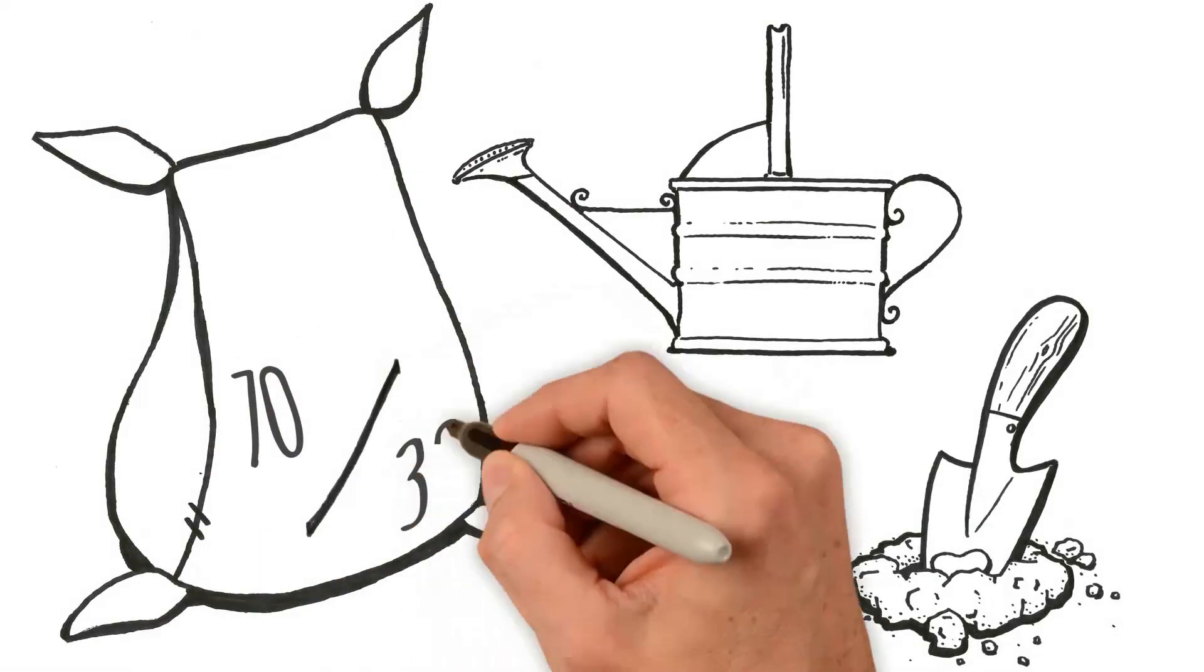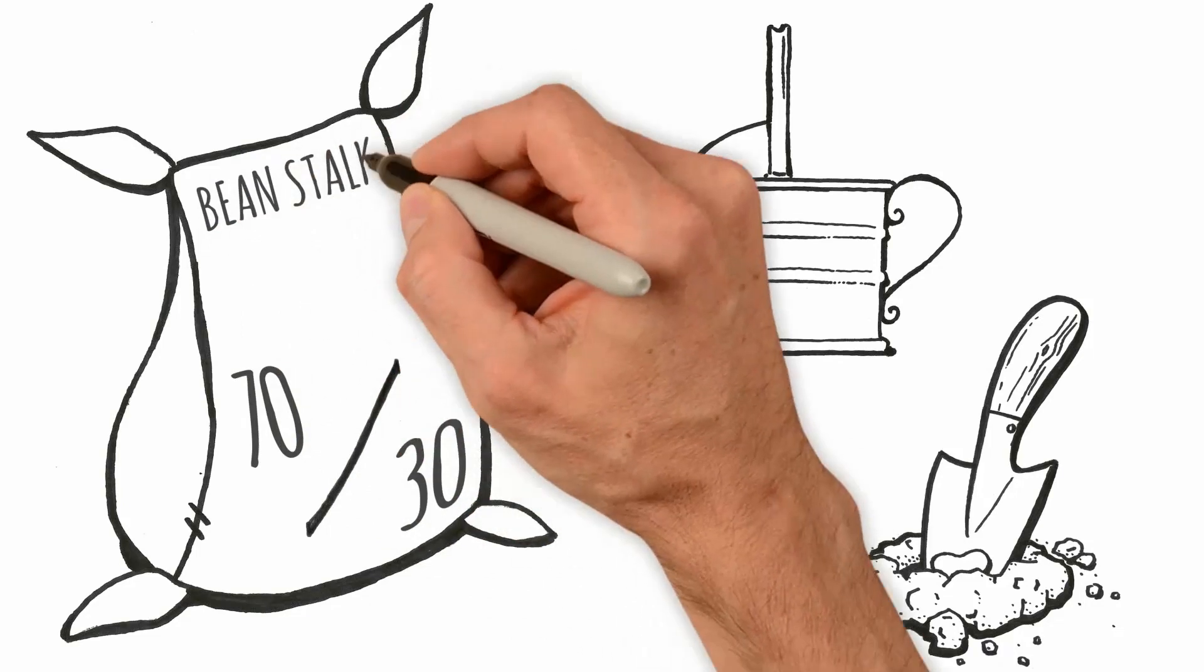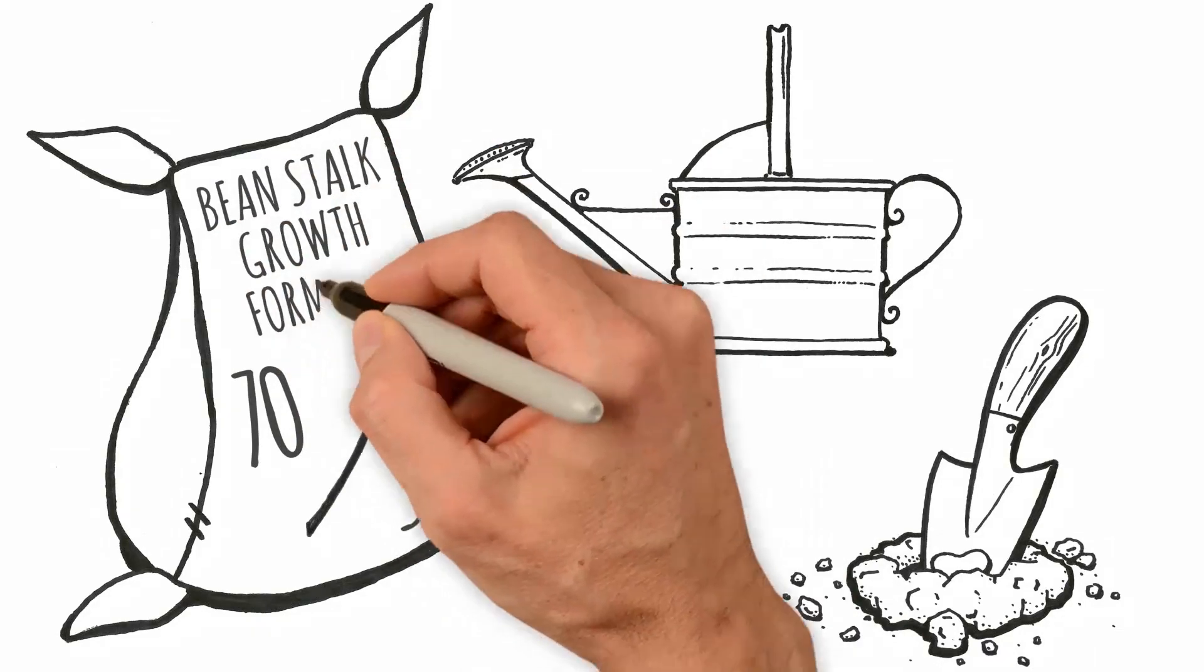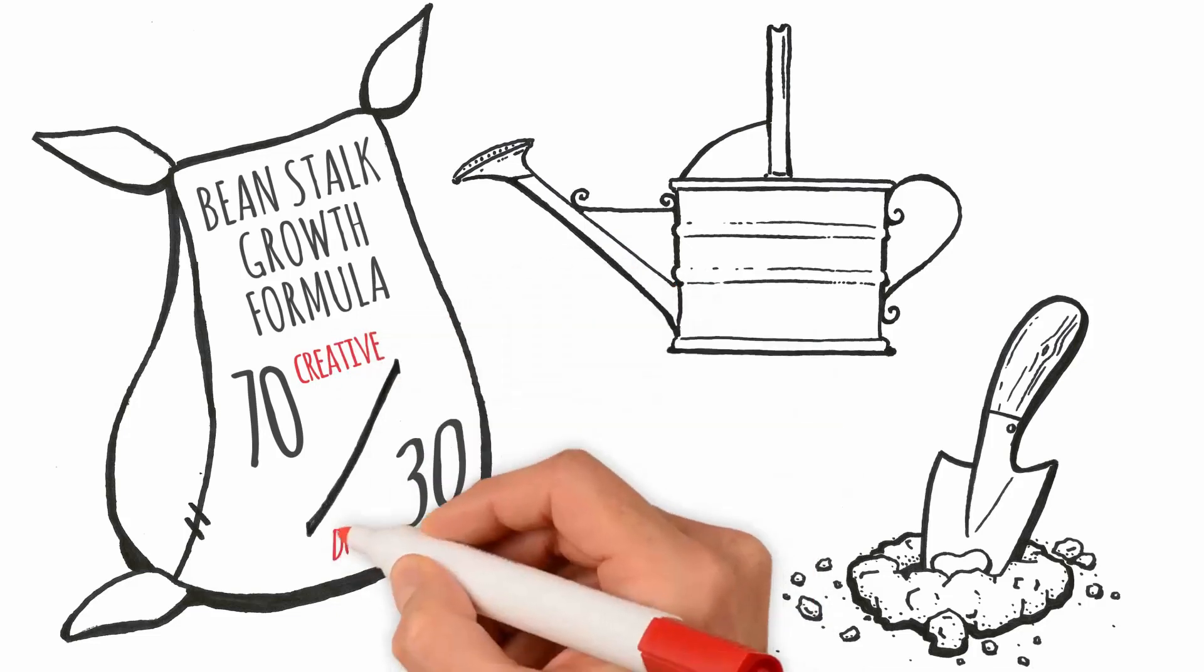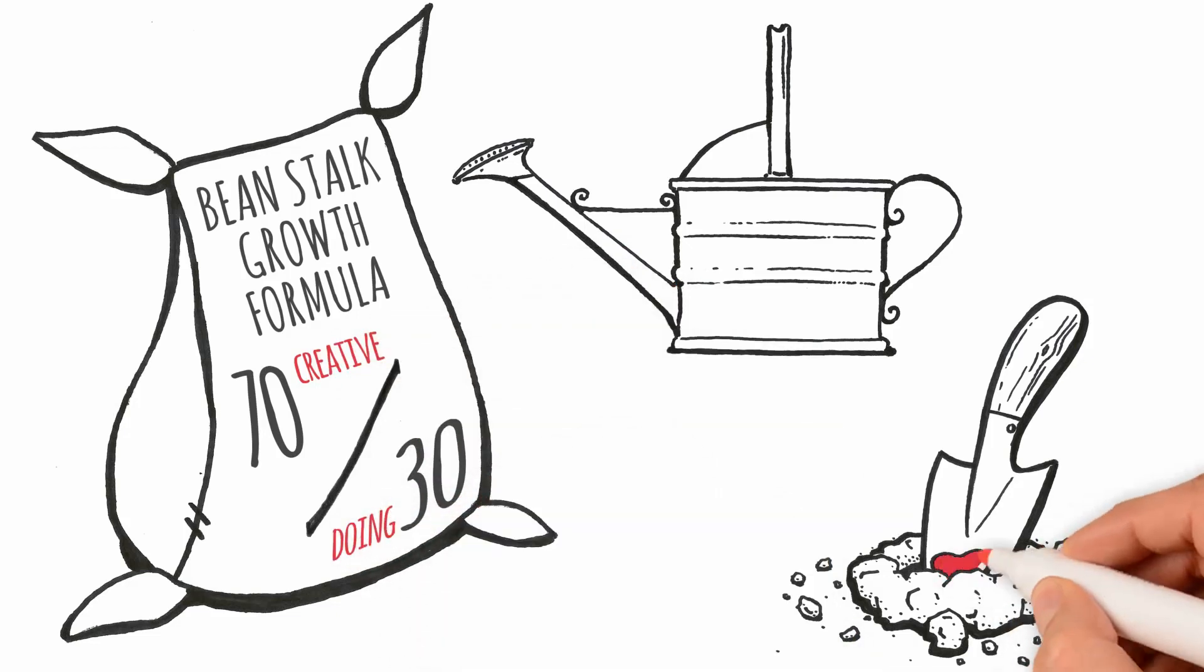Rick used to call it the 70-30 rule, the smoking gun law of the balance between creative and doing. 70% of success came from ingenious creative ideas, with 30% from your implementation.